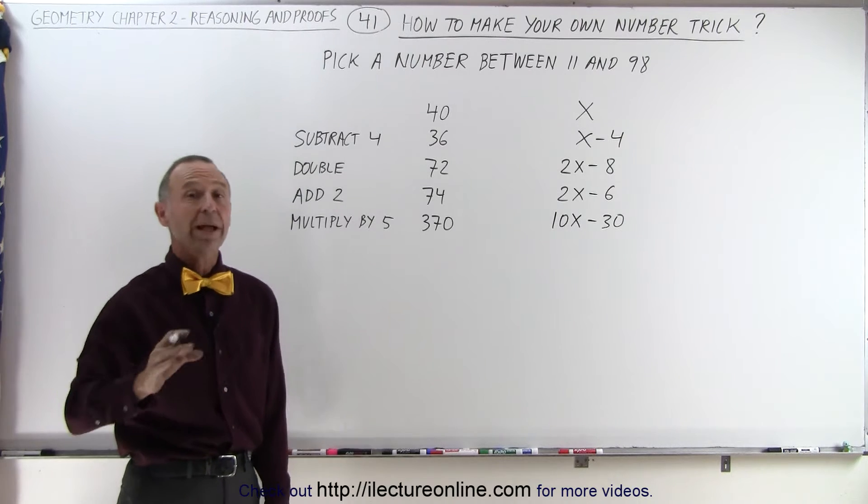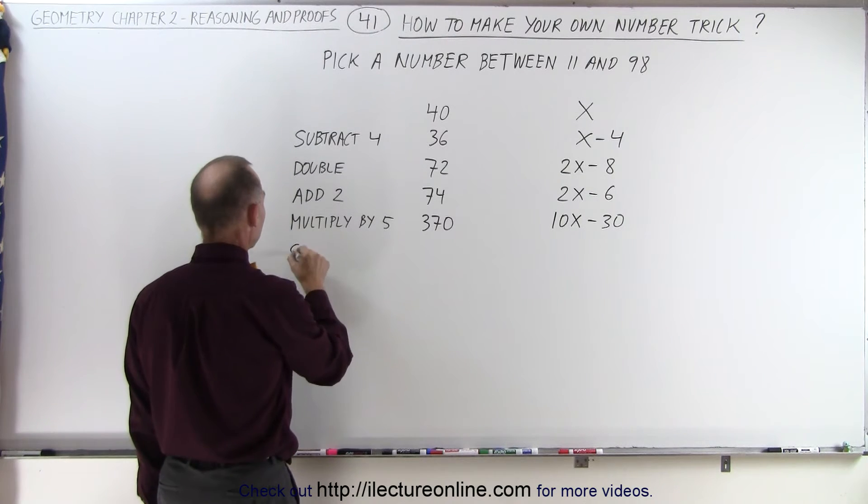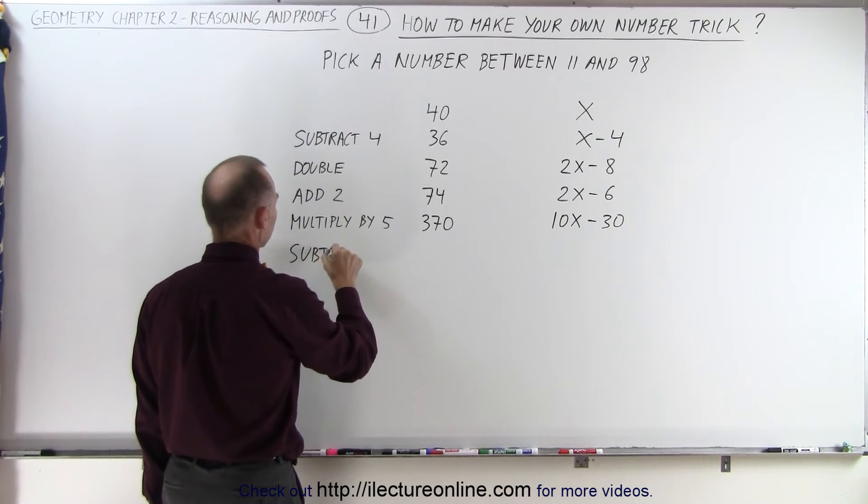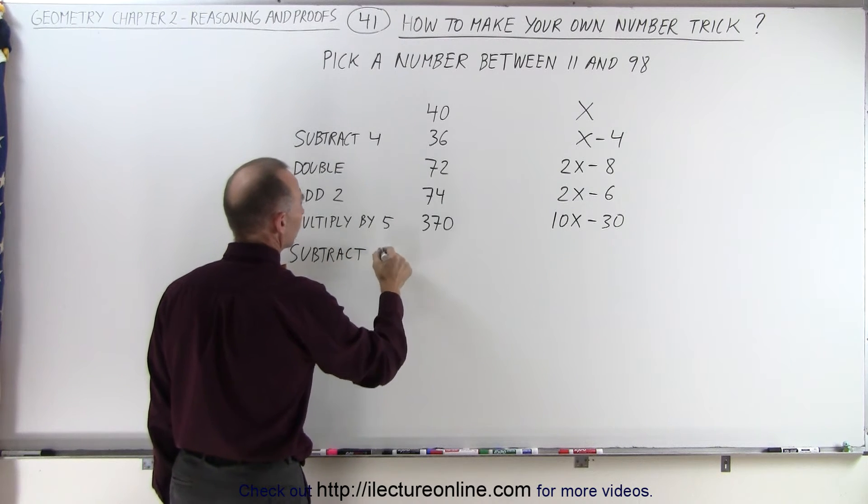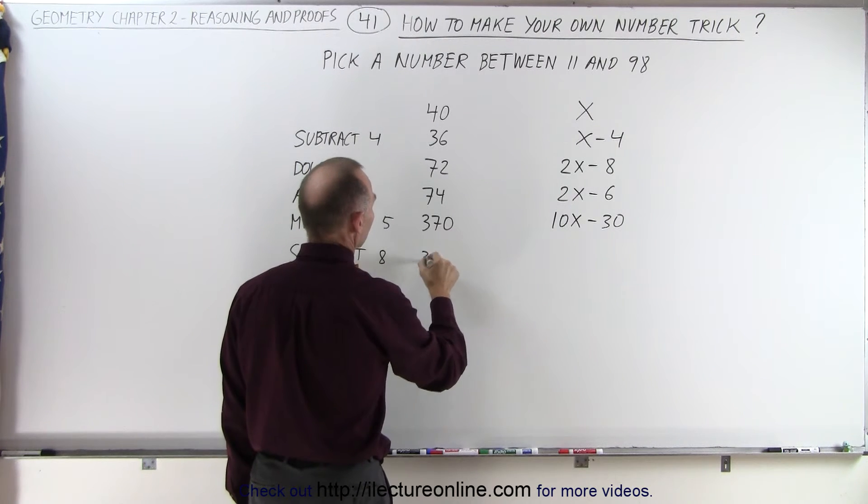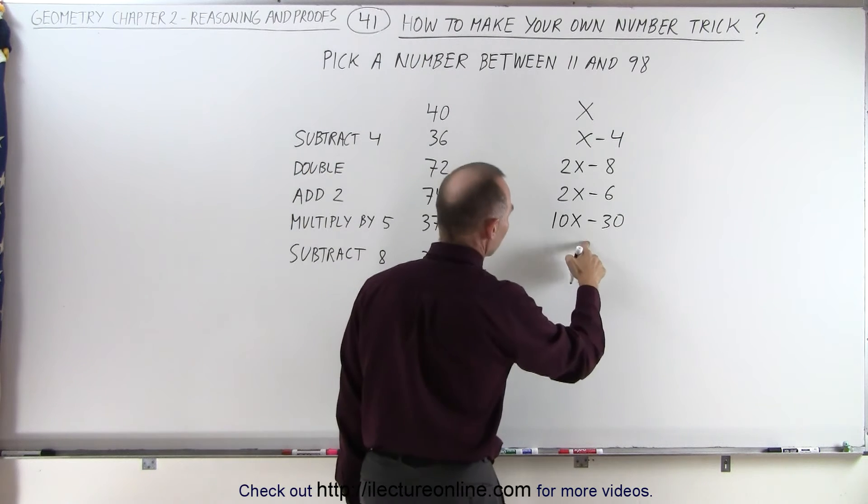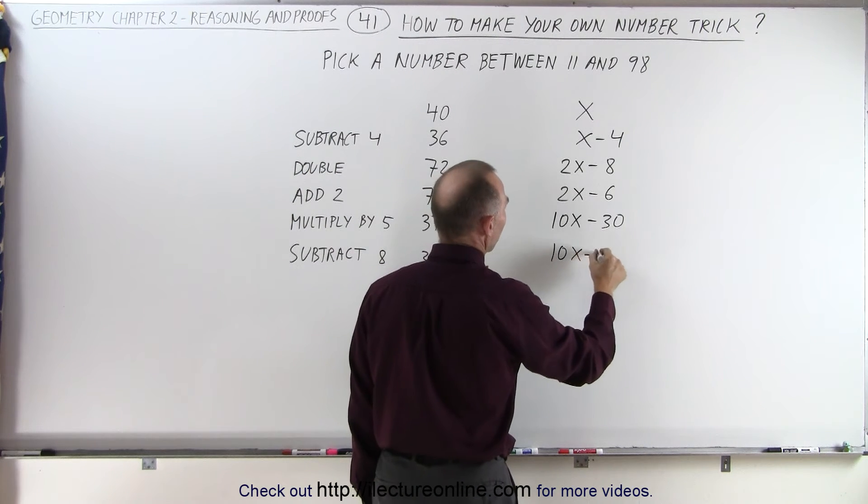Now we can say subtract another 8. So subtract 8, it gives us 362. Subtract 8 from this, that gives us 10x minus 38.